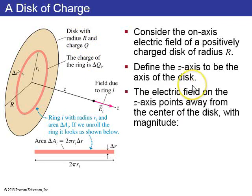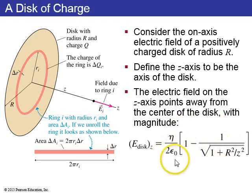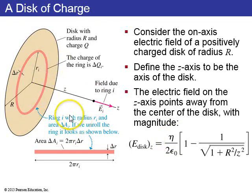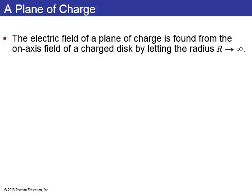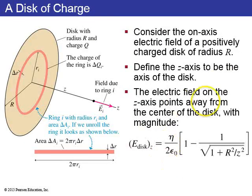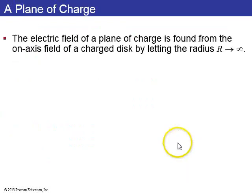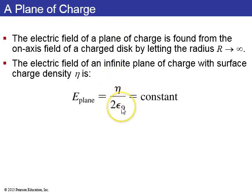Integrating a series of rings from zero to radius R gives a disk. The electric field of a disk is eta over 2 epsilon naught times the quantity 1 minus 1 over the square root of 1 plus R squared over z squared, where eta is the charge per unit area Q divided by pi R squared. As R goes to infinity, the square root term becomes infinite and you get one minus zero.